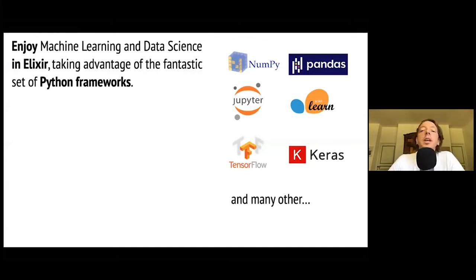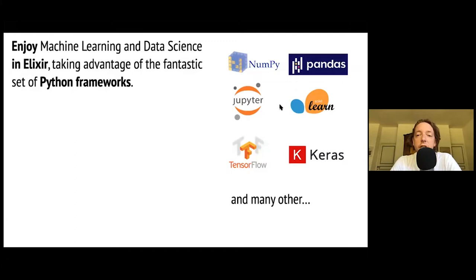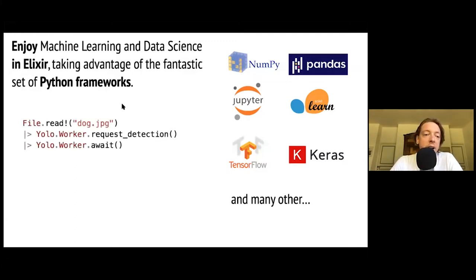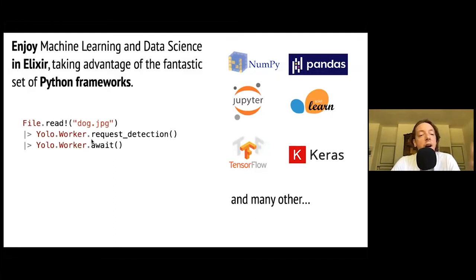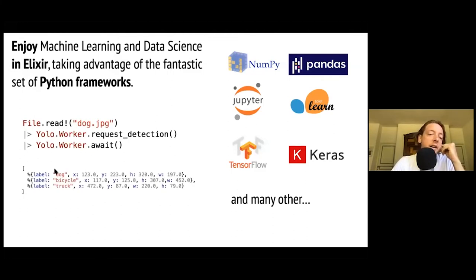We're going to see how to bring some of the features of Python's machine learning and data science frameworks on the right, and have a nice Elixir syntax like the one on the left. In this example, we'll see how to use Elixir to detect objects in an image and frames coming from a camera, to get a nice result — a list of detected objects with labels and coordinates.